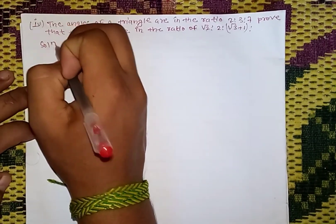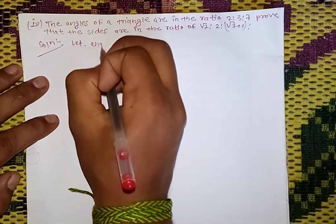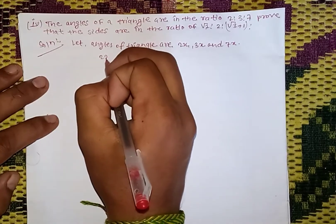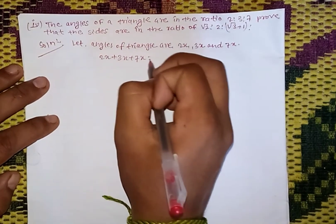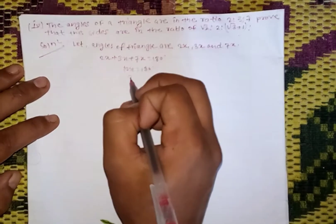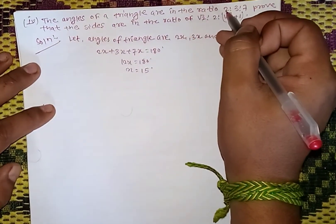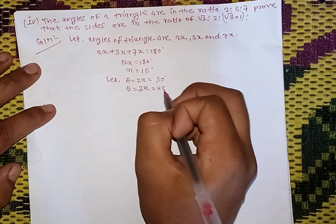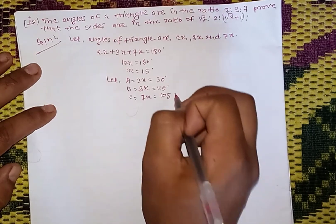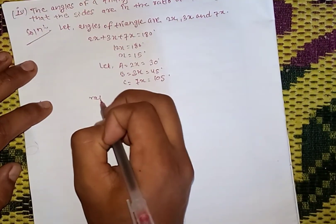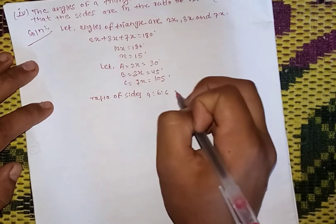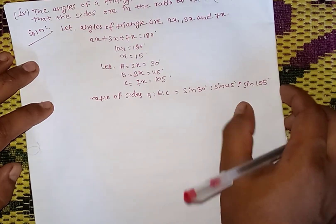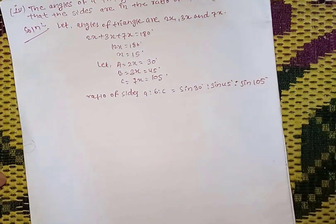Another question: the angles of a triangle are 2x, 3x, and 7x. From triangle law: 2x plus 3x plus 7x equals 180 degrees, so 12x equals 180, giving x equals 15 degrees. Let A equals 2x equals 30 degrees, B equals 3x equals 45 degrees, C equals 7x equals 105 degrees. Ratio: a is to b is to c equals sin 30 is to sin 45 is to sin 105 degrees.